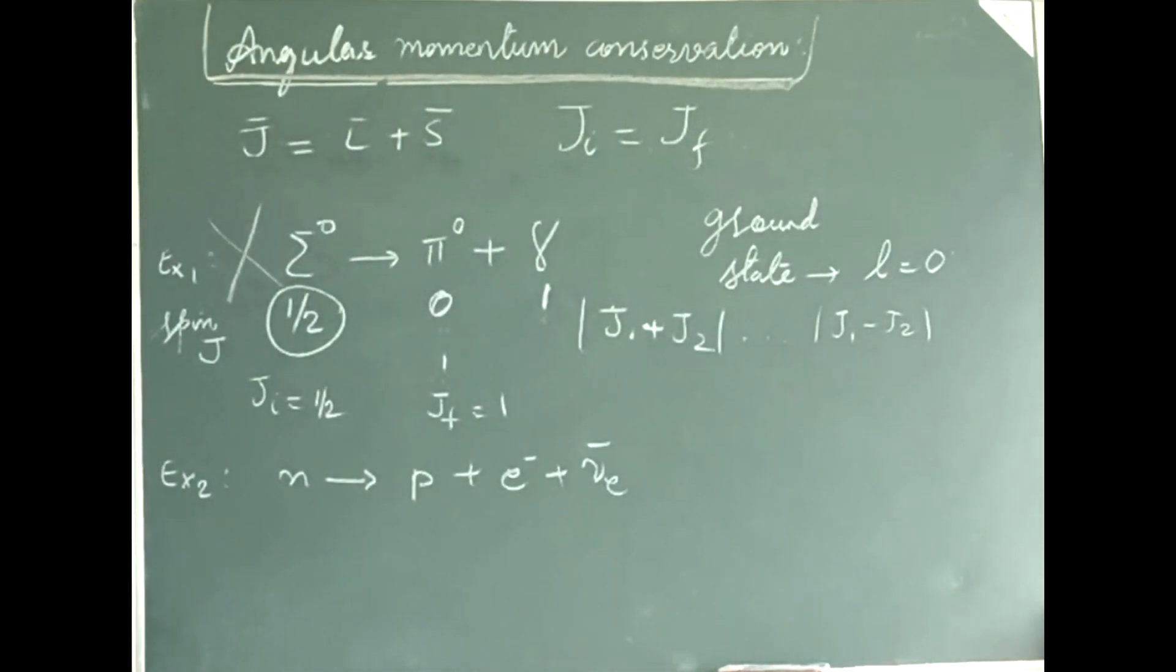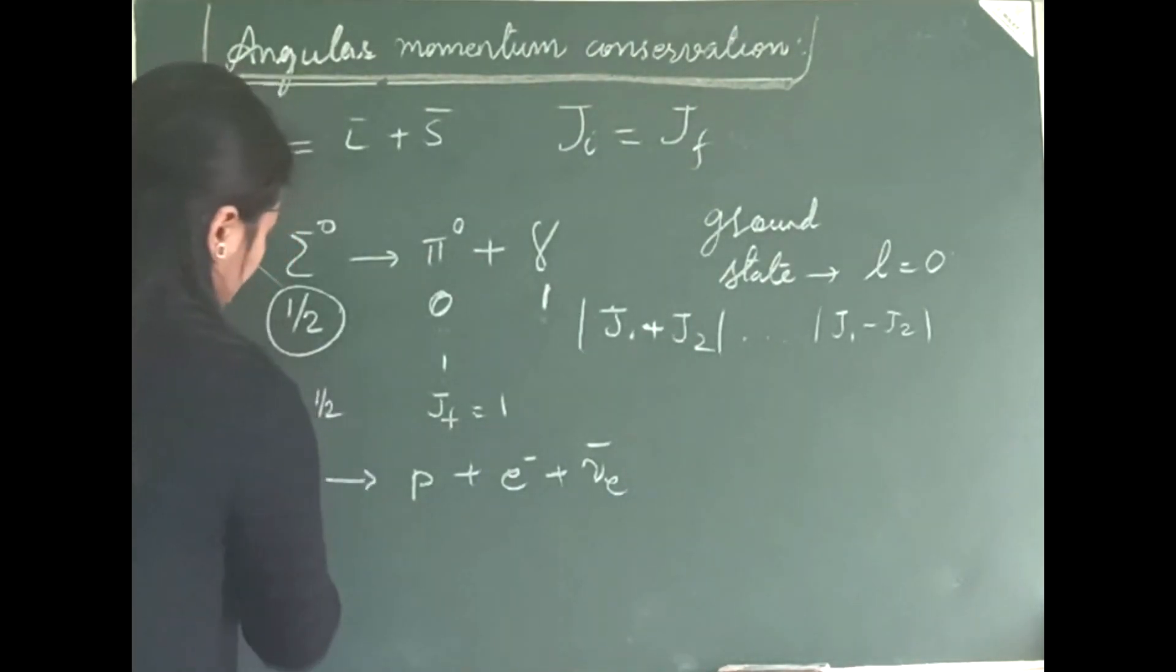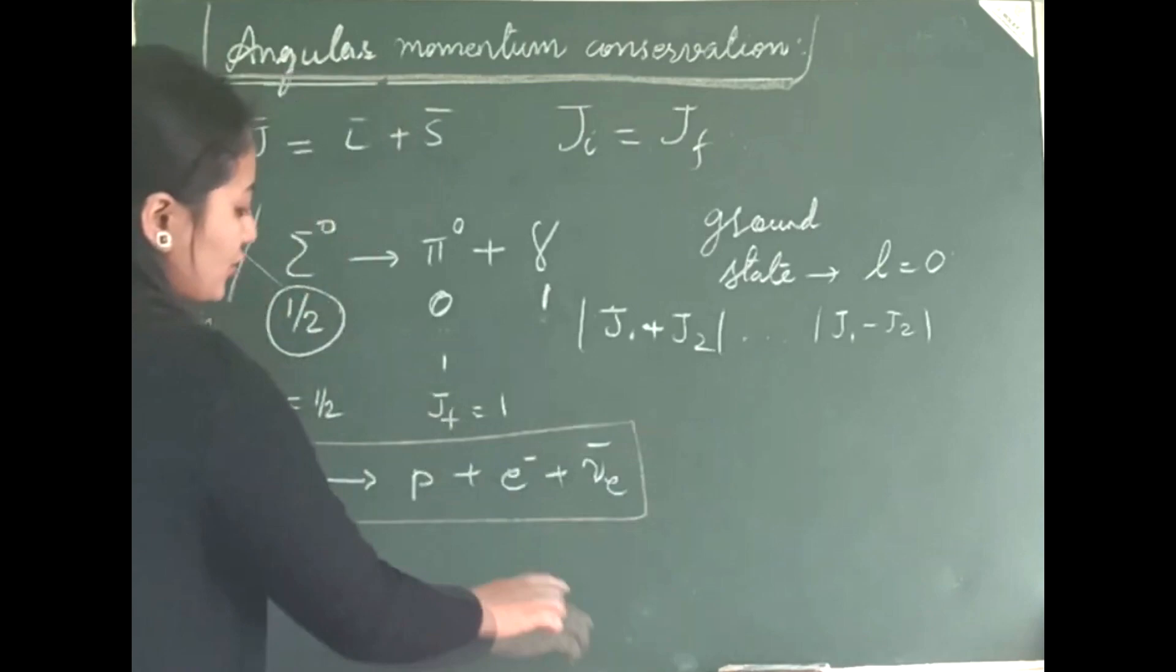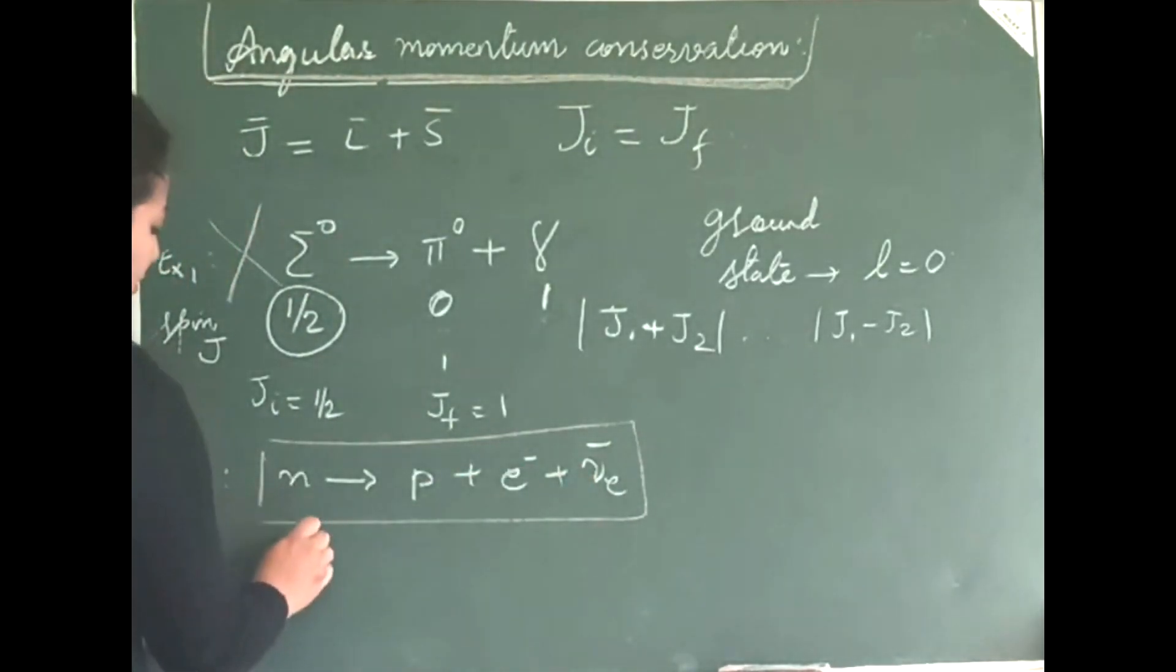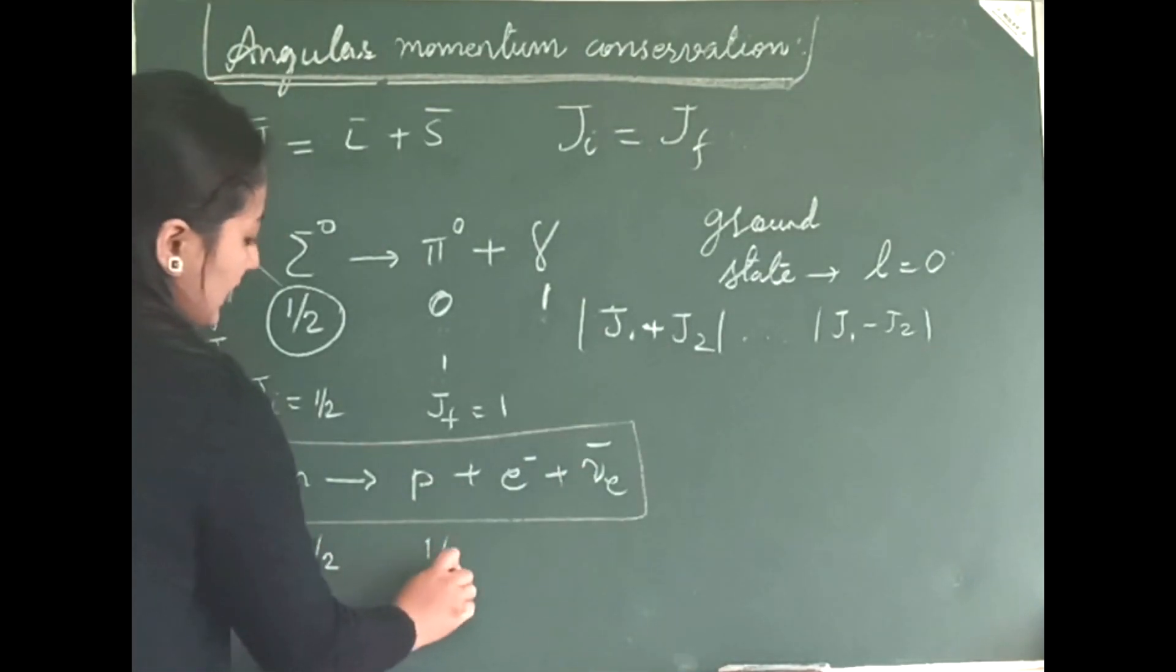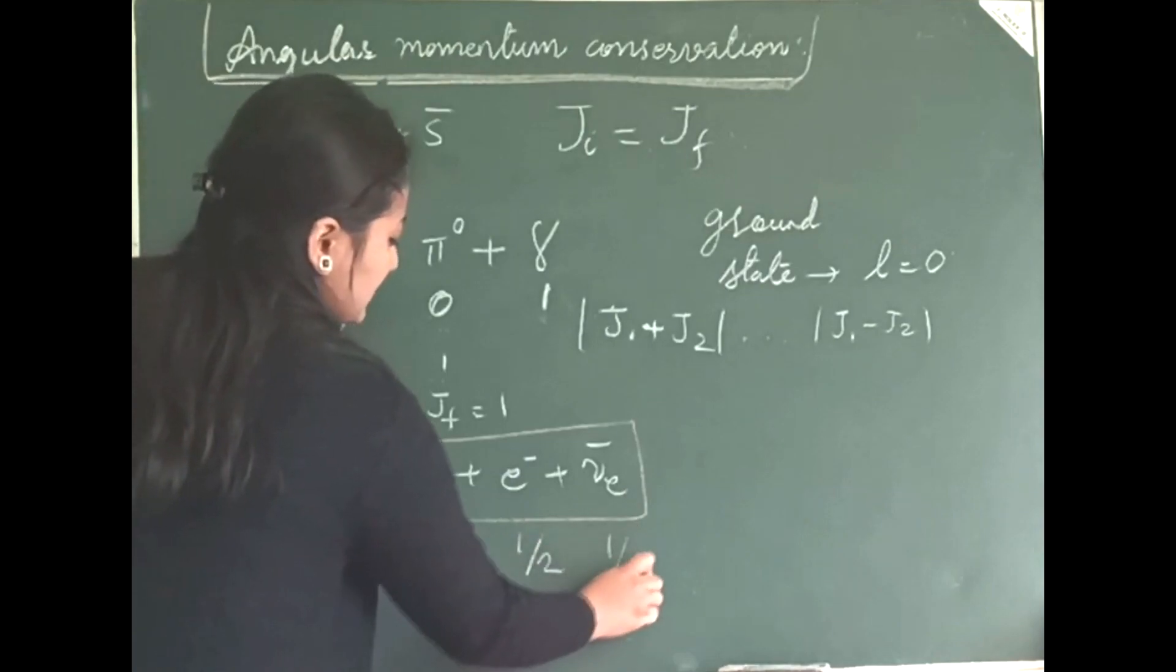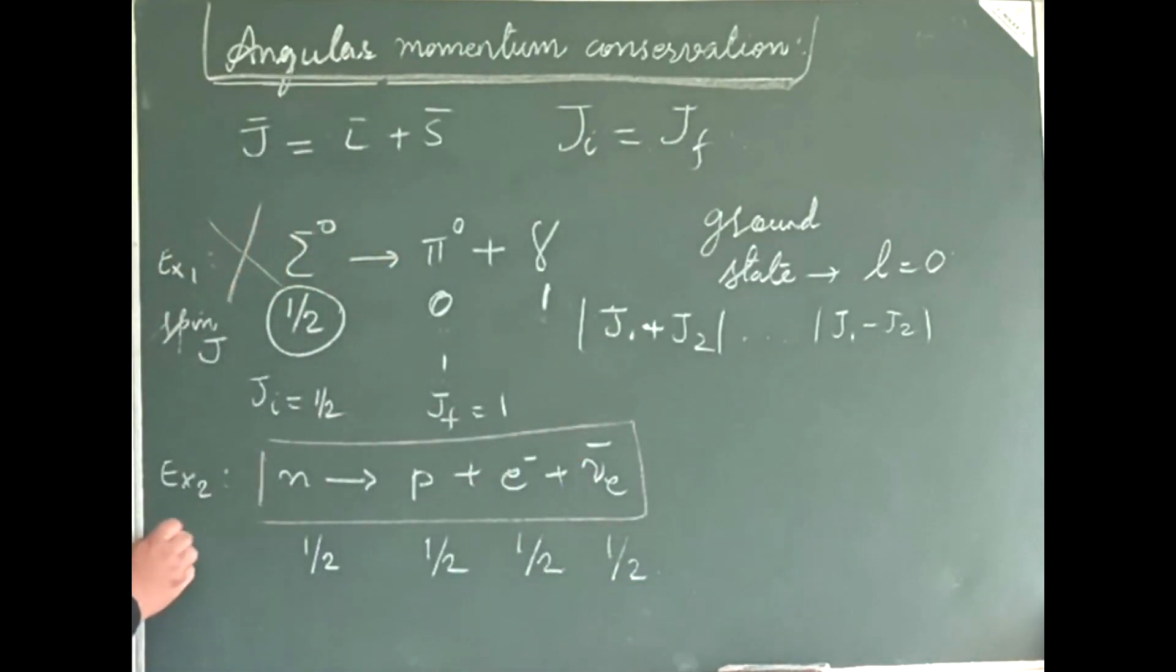Now, let us look into the other example. This is your famous beta decay. Neutron going into proton plus an electron and an anti-neutrino. Here you have spin half, half, half and half. This is your spin and also this is your J because we are considering ground state where L equals to 0. On your reactant side, you have your Ji as half.